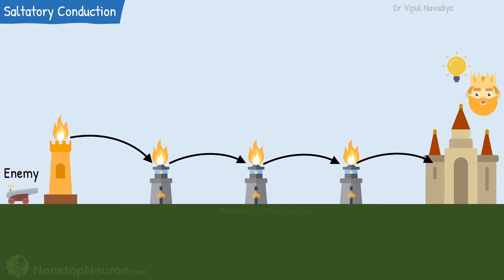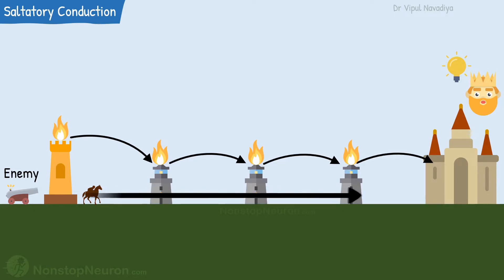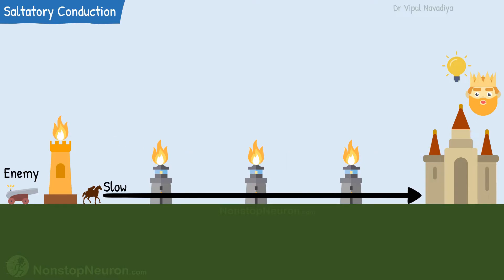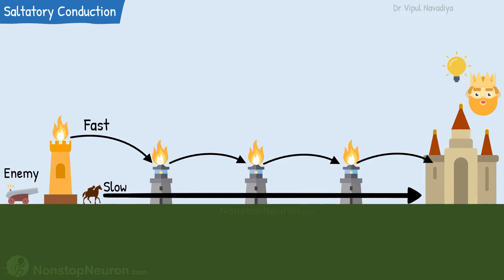Sending alerts this way is very fast. You see the difference? With a human messenger, the signal passes continuously through the entire distance between the border and the palace — this is slow. But with lighthouses, the signal jumps from one lighthouse to the next lighthouse, and transmission by this way is very fast.